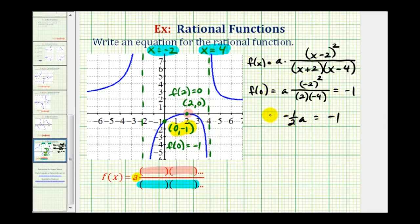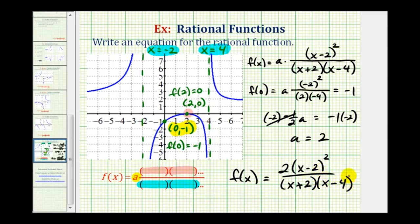Multiply both sides by negative 2. Negative 2 times negative 1/2 would be 1. So this is a equals positive 2. So now that we know the value of a, we have our function. If a is equal to 2, we'll have 2 times the quantity (x-2) squared, divided by the quantity (x+2) times the quantity (x-4). This would be our rational function. I hope you found this helpful.